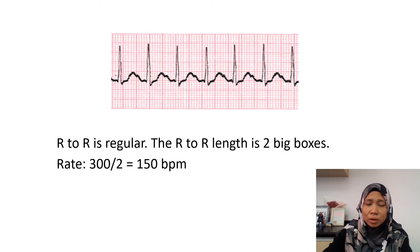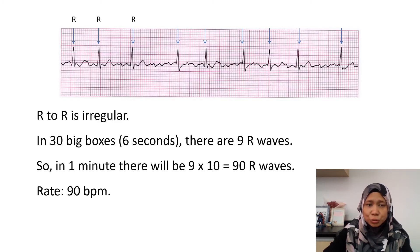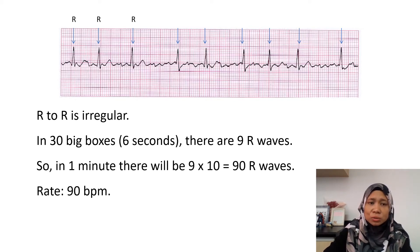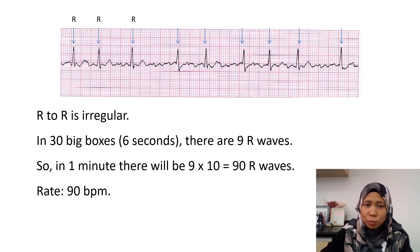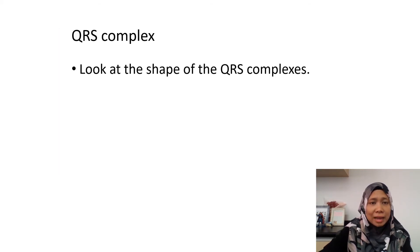Looking at this strip, the R-to-R is irregular, so we count in 30 big boxes. In those 30 big boxes we can see there are 9 R waves. So in one minute there will be 9 times 10, which equals 90 R waves. Therefore the rate is 90 beats per minute.